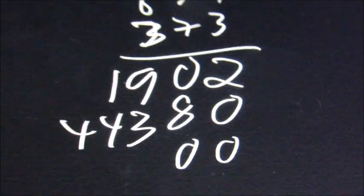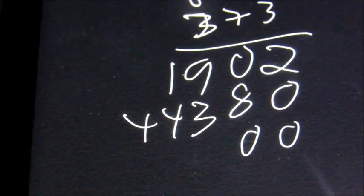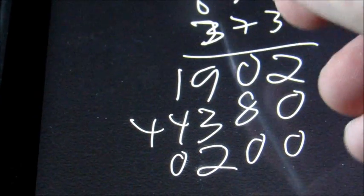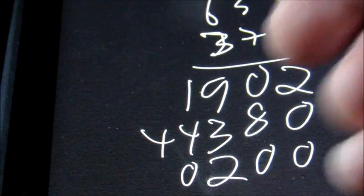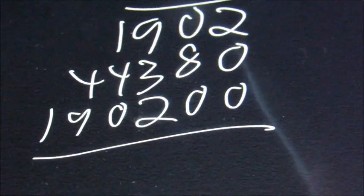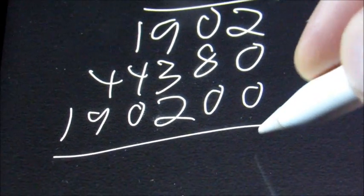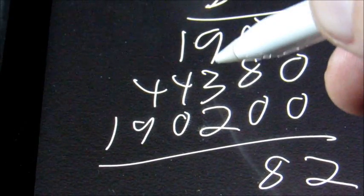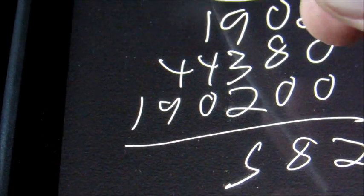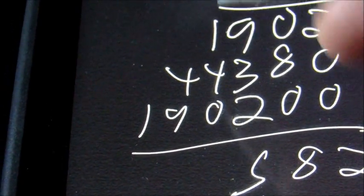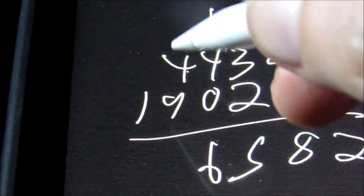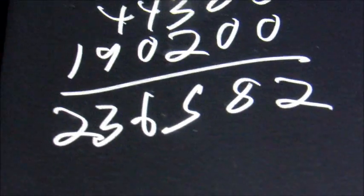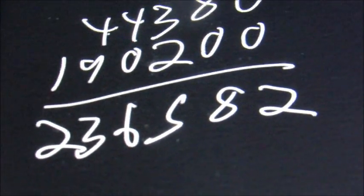Put now 2 placeholders. And we have 3 times 4 is 12. 3 times 3 is 9, plus 1 is 10. 3 times 6 is 18, plus 1 is 19. Now we add all numbers. 2 plus 0 plus 0 is 2. 0 plus 8 plus 0 is 8. 9 plus 3 plus 2 is 15. 1 plus 1 plus 4 is 6. 4 plus 9 is 13. And 1 plus 1 is 2. So the answer here would be 236,582.